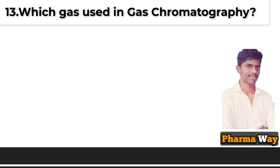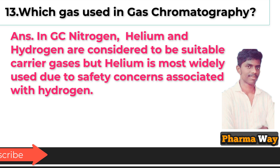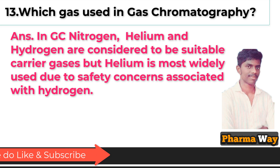Which gas is used in gas chromatography? Answer: In gas chromatography, nitrogen, helium, and hydrogen are considered suitable carrier gases, but helium is most widely used due to safety concerns associated with hydrogen.